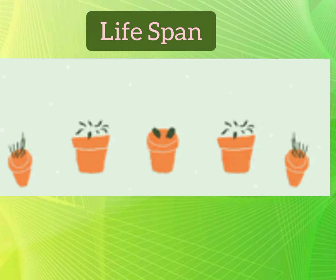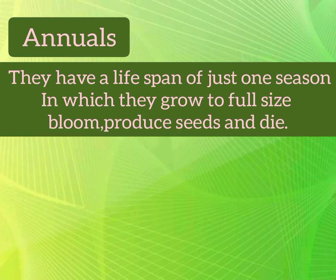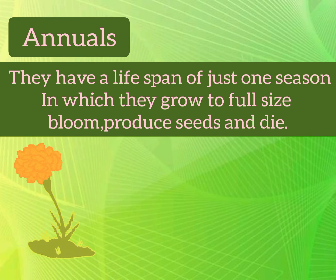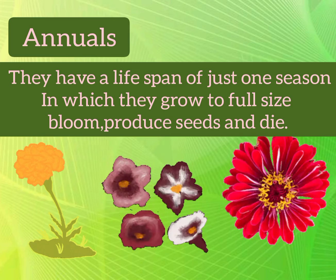First, annuals — they have a life span of just one season or one year, in which they grow to full size, bloom, produce seeds and then die. For example, marigold, petunia and zinnia.